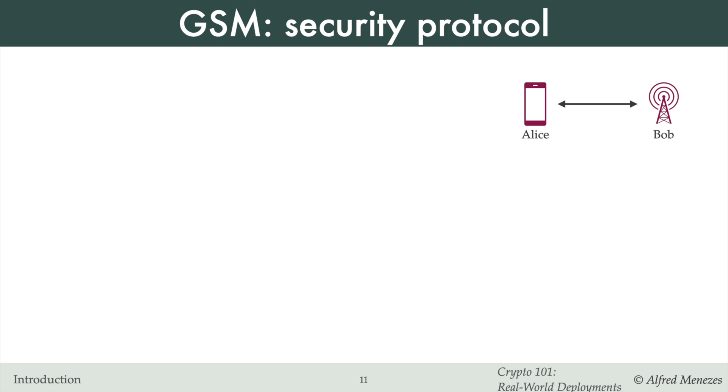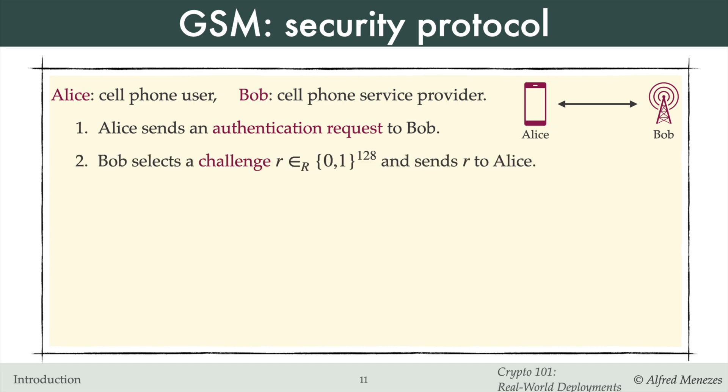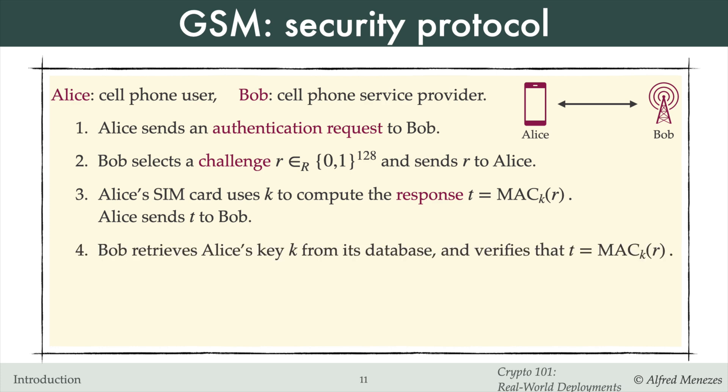Here's the basic GSM security protocol. Alice sends an authentication request to Bob. Bob generates a randomly selected 128-bit challenge R and sends it to Alice. Alice's SIM card computes the response T — the MAC tag of R using key K — and sends T to Bob. Bob retrieves Alice's key K from his database and verifies that the tag is valid; if correct, Bob is confident he is communicating with Alice. Bob selects a new random challenge for each session, preventing an eavesdropper from reusing a captured challenge and response to impersonate Alice. This approach prevents replay attacks.